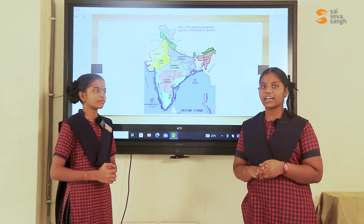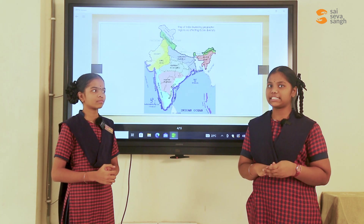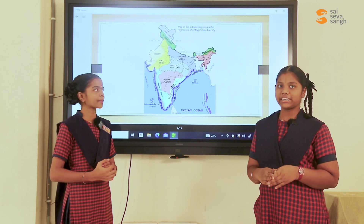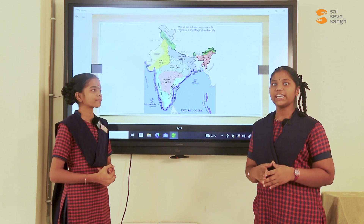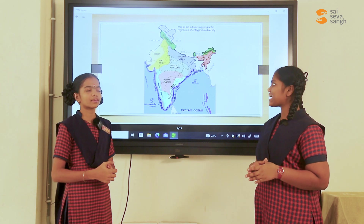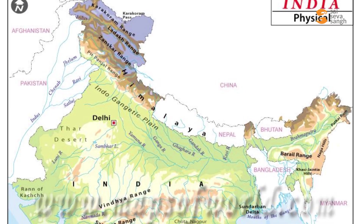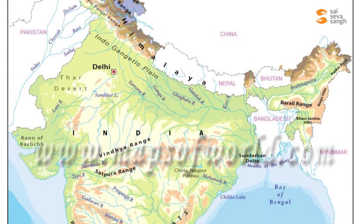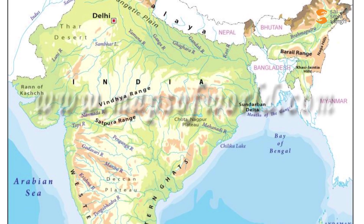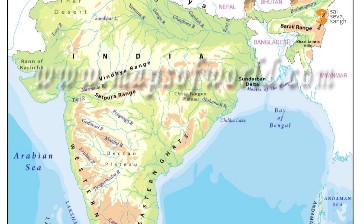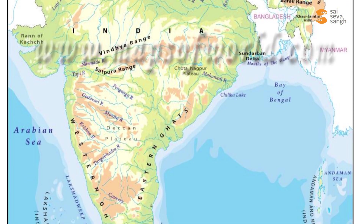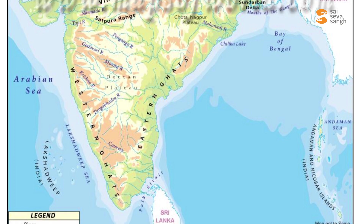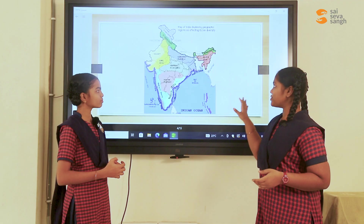Next, let's talk about geographical diversity. The physical features of India can be divided into six categories: Himalayan mountains in the north, Thar desert in the west, coastal plains, islands, northern plains, and peninsular plateau.